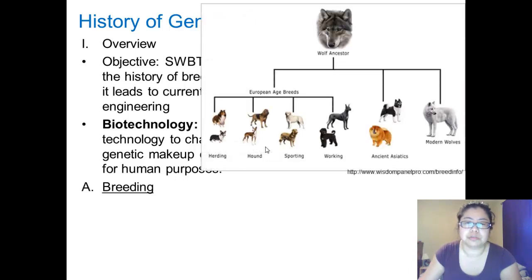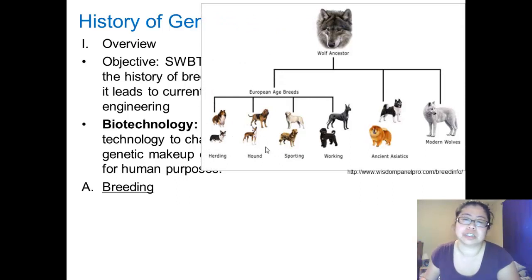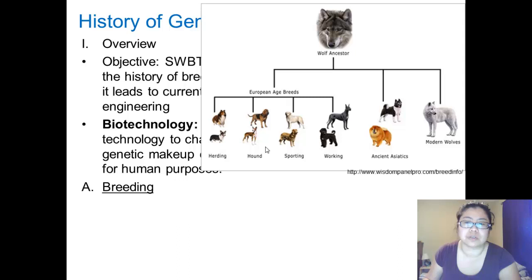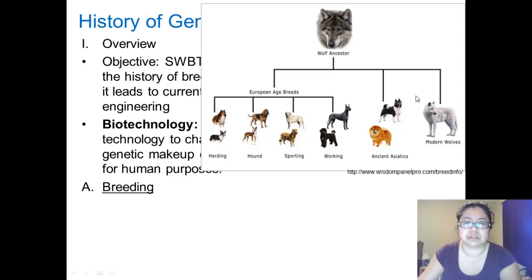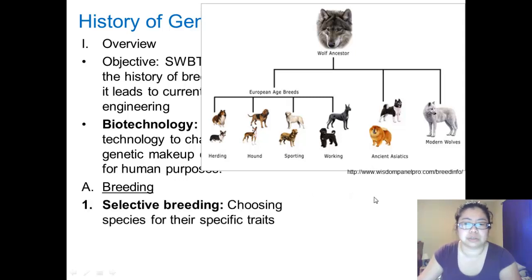We're going to start off with breeding. It has been documented in the Egyptian days that there were pets such as domesticated cats. Even before then, humans have taken wild animals such as the wolf, domesticated them throughout the years, and bred them to have different features. Here we have ancient Asiatics and a plethora of European age breeds.